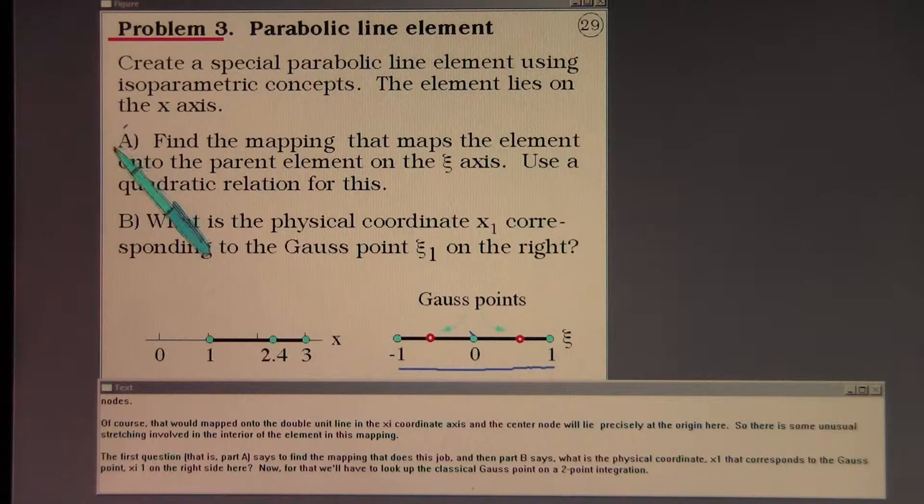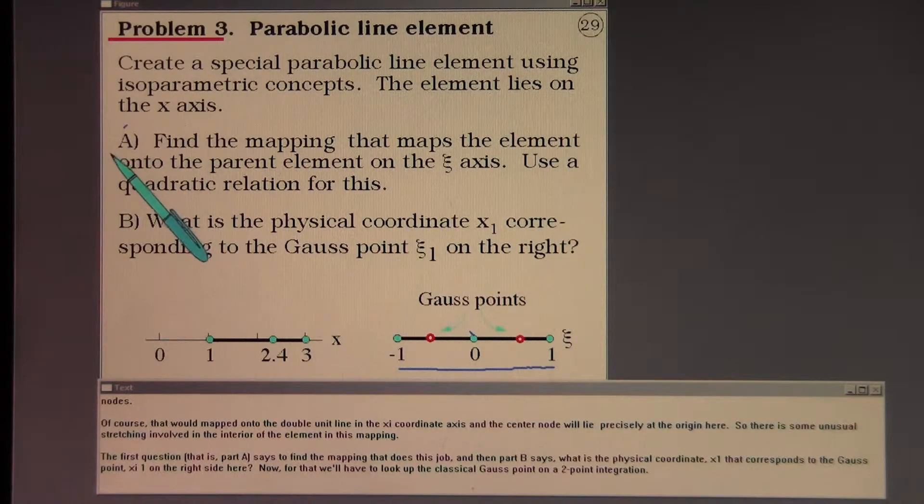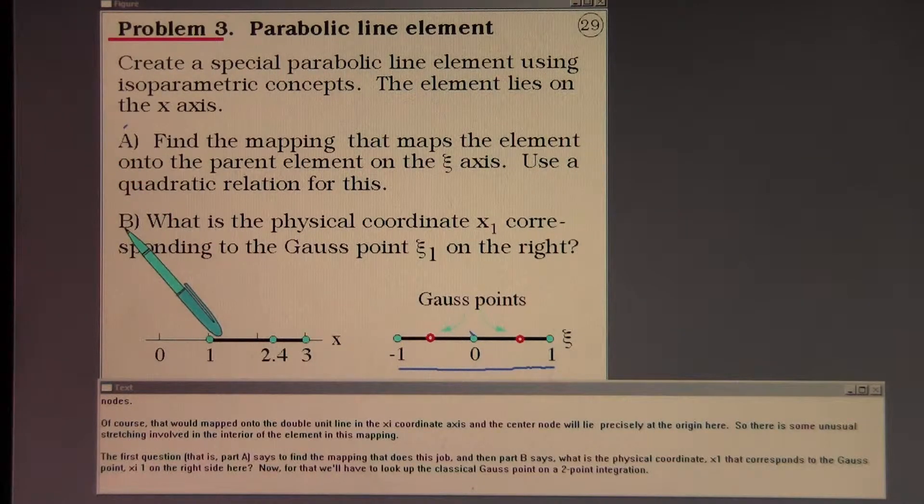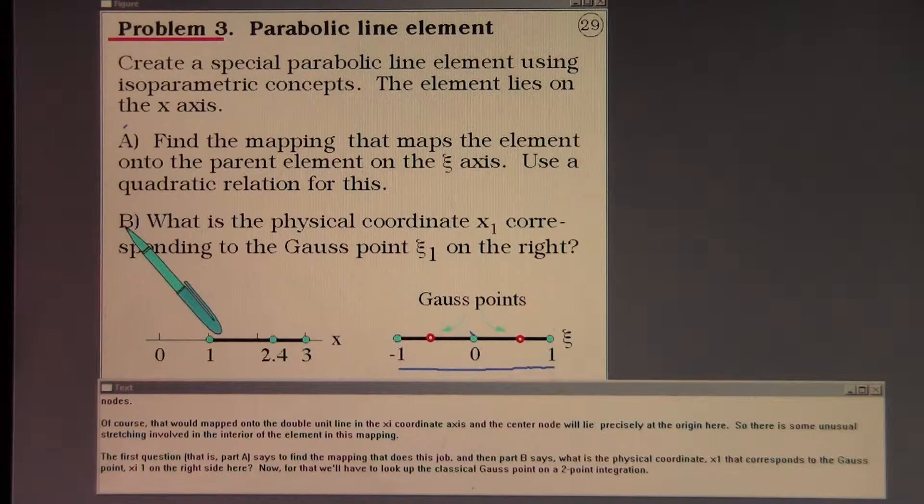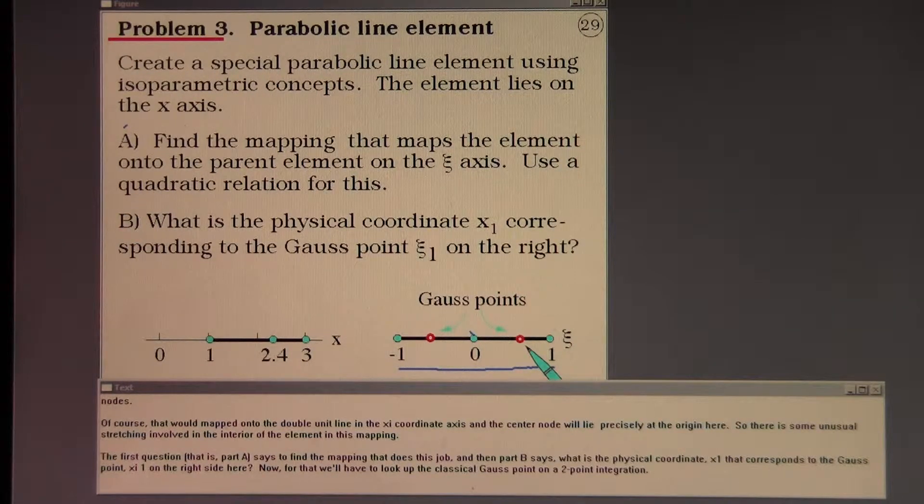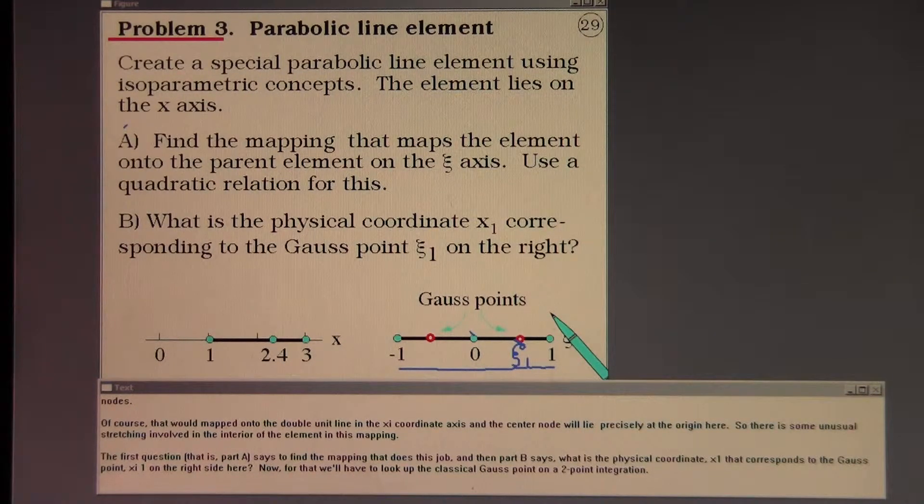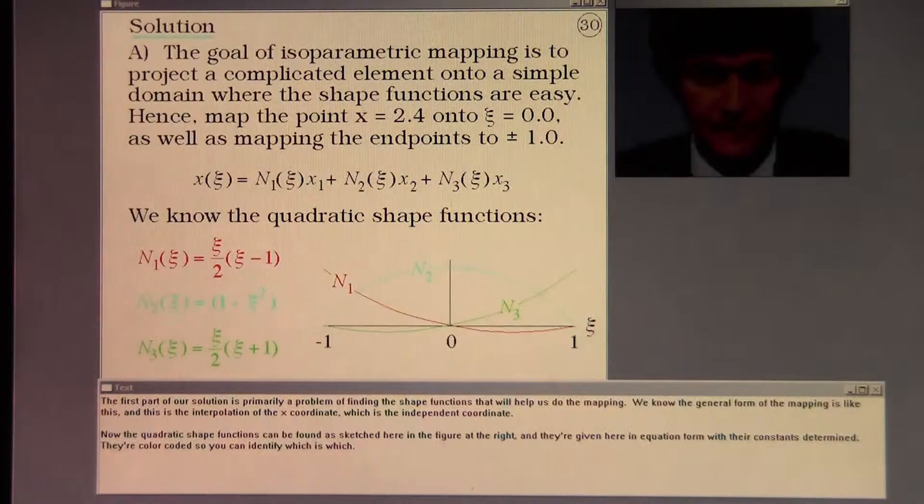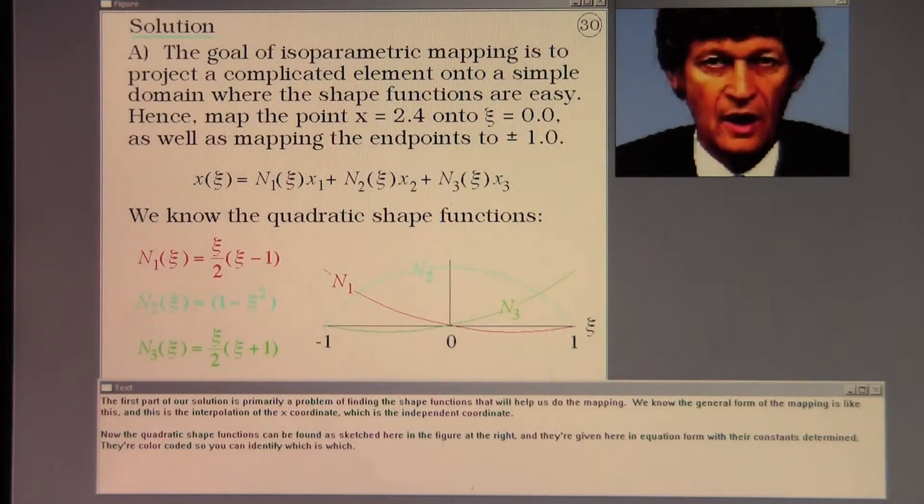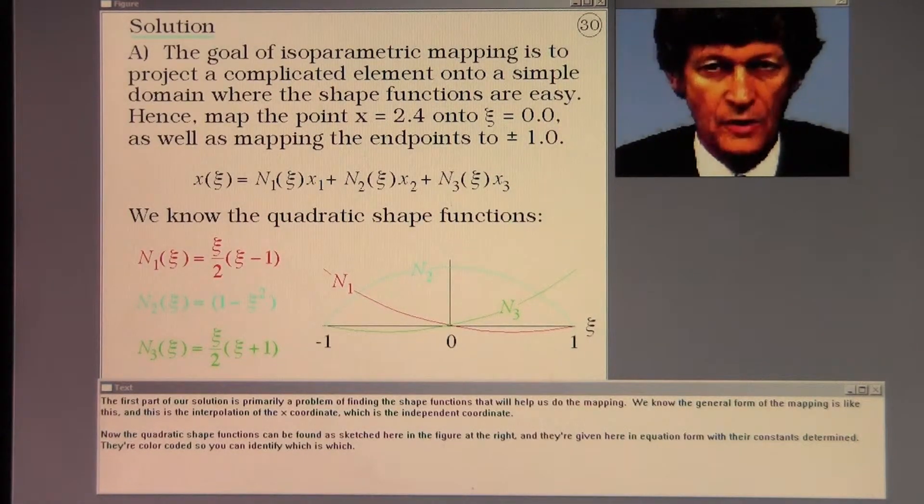The first question, that is part A, says to find the mapping that does this job. And then part B says, what is the physical coordinate X1 that corresponds to the Gauss point ξ1 on the right side here. Now for that we'll have to look up the classical Gauss point on a two-point integration. The first part of our solution is primarily a problem of finding the shape functions that will help us do the mapping.